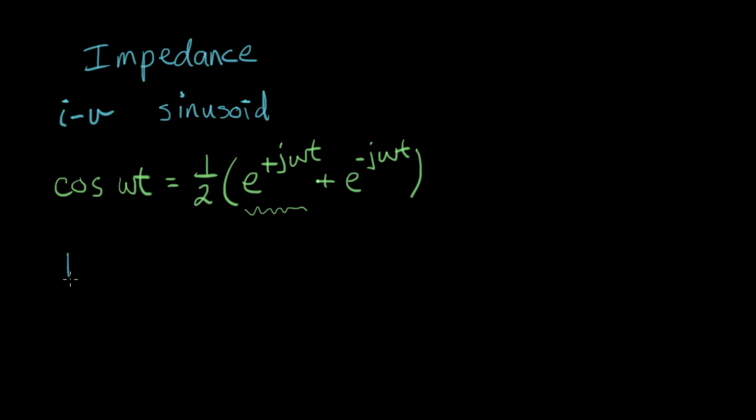So we're going to start with the resistor. Here's a resistor. And we know that Ohm's law is V equals I times R. And just for the moment, I'm going to assume that the current, let's assume that I equals e to the plus j omega t.